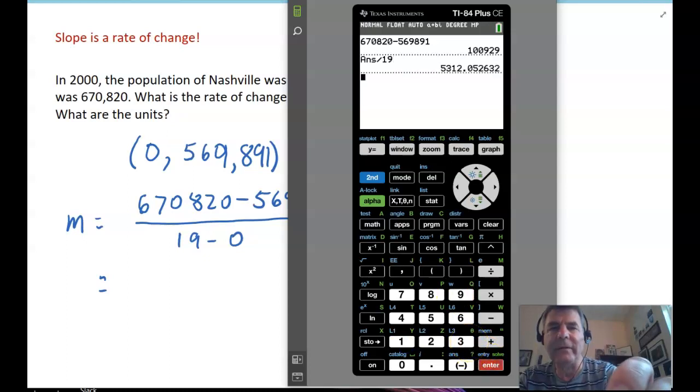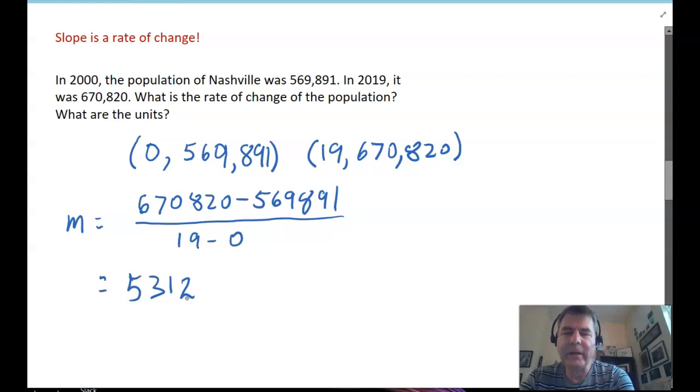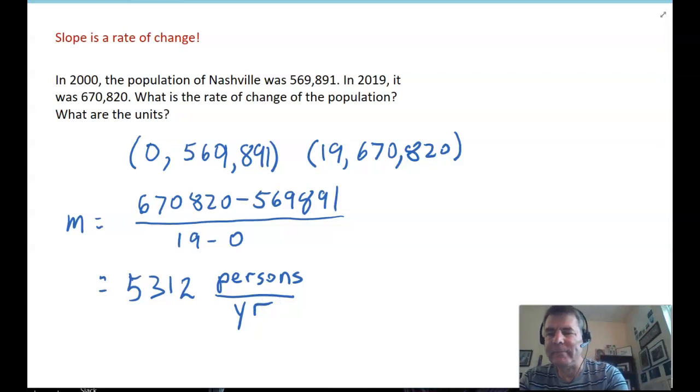And we're getting 5,312. What does that number mean? Well, it's change in population over time. And that means that we are adding, since it's positive, we're adding 5,312 persons every year. That's the rate of change of the population of Nashville, Tennessee.